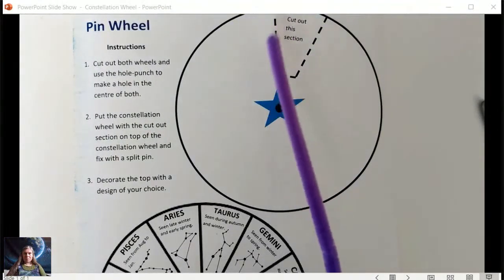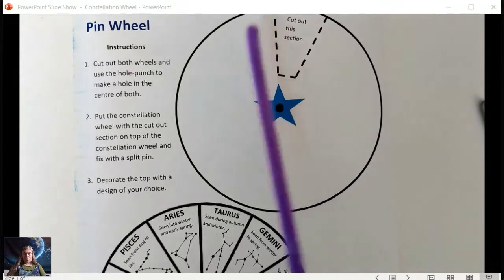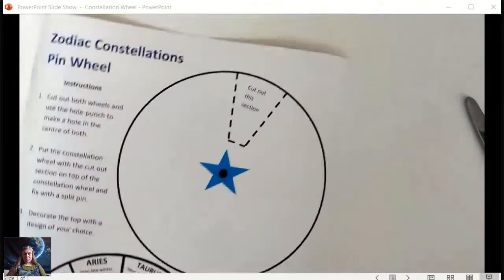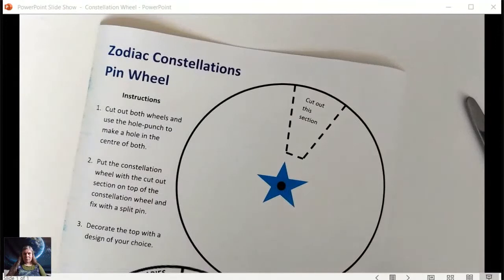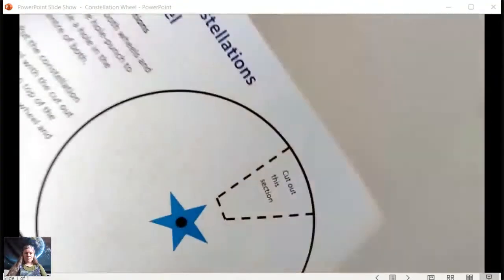A pipe cleaner—or if you prefer, a split pin—and a pair of scissors. What we've got to do first is cut out the two circles, so I'm going to start with the first one.